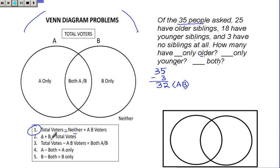Then I'm going to take my A plus my B, and that gives me my total votes. Here's my A, and the A has older siblings, so I'm going to put O for older right here.